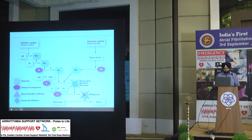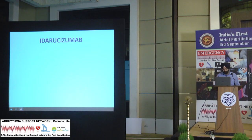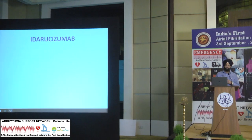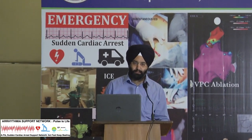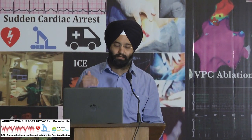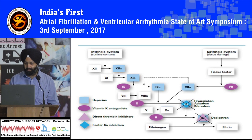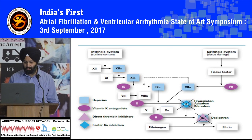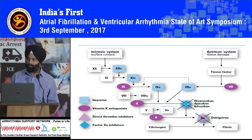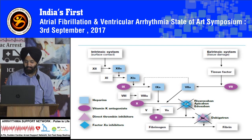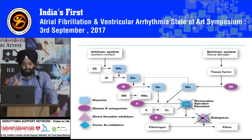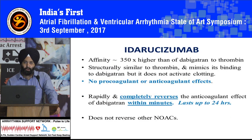It binds to factor 2a. The binding of edarucizumab with thrombin is almost 350 times higher than the binding of dabigatran to thrombin. So it is much more strongly bound to thrombin as compared to dabigatran. It is structurally quite similar to thrombin and mimics its action but it does not activate any clotting. No procoagulant or anticoagulant effects have been seen with edarucizumab.